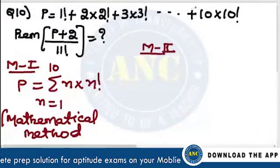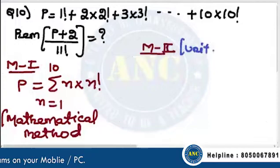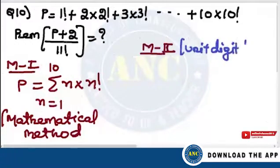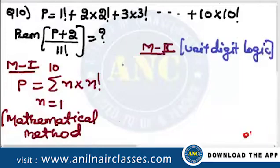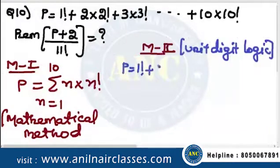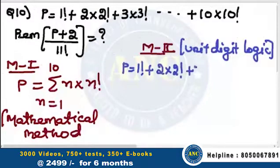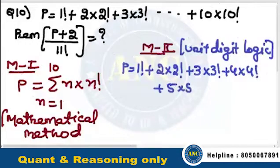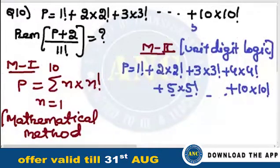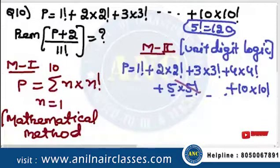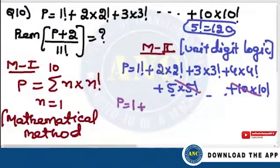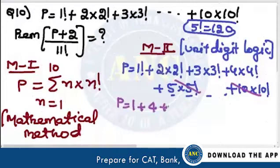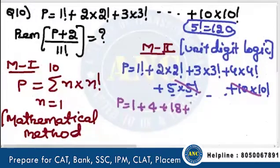Method 2: Simple observation — unit digit logic. P is nothing but 1 factorial plus 2 into 2 factorial plus 3 into 3 factorial plus 4 into 4 factorial plus 5 into 5 factorial. From 5 factorial onwards, 5 factorial is 120, so unit digit will be 0. So all those terms cancel out. It is nothing but: 1, 2 twos are 4, 3 sixes are 18, 24 fours are 96.